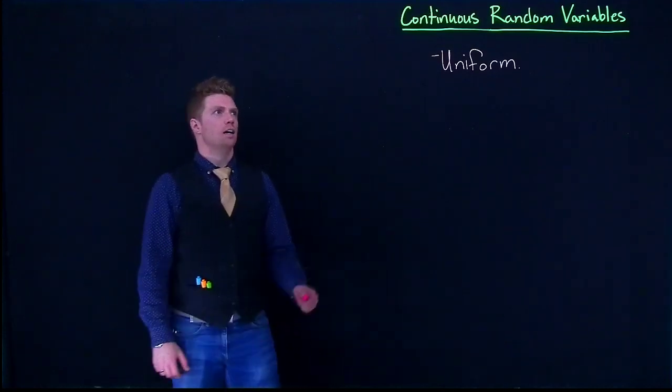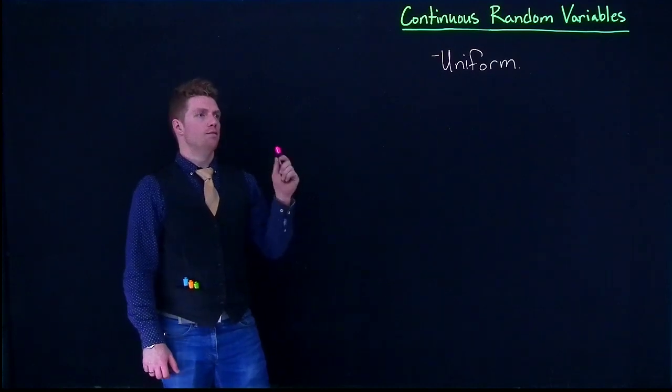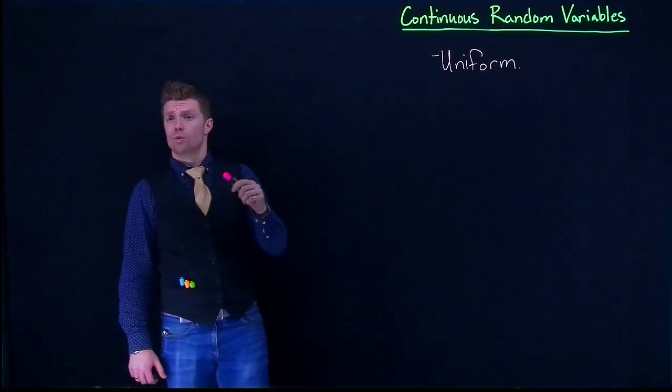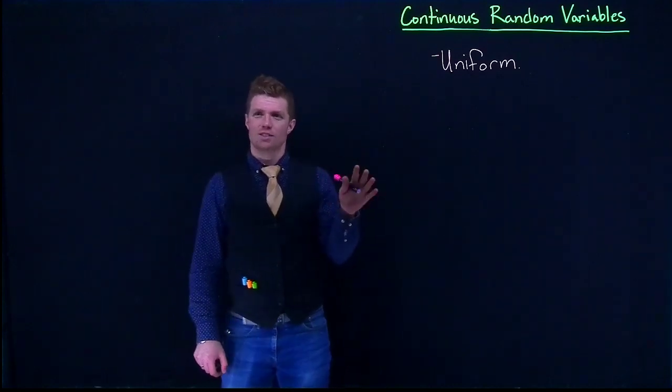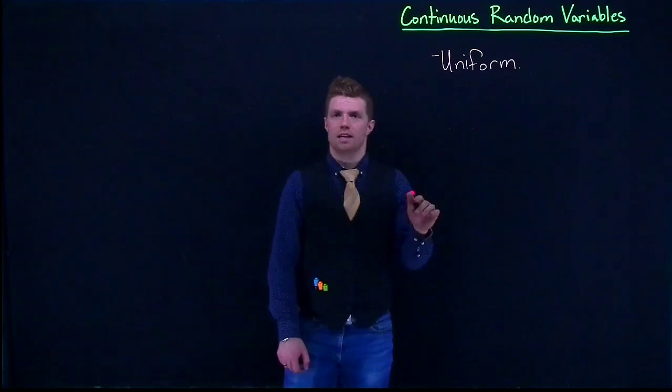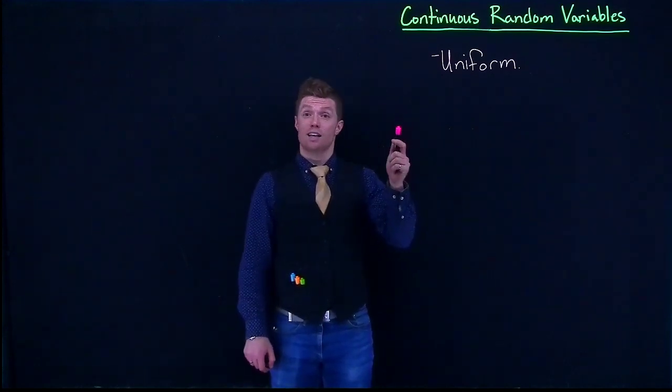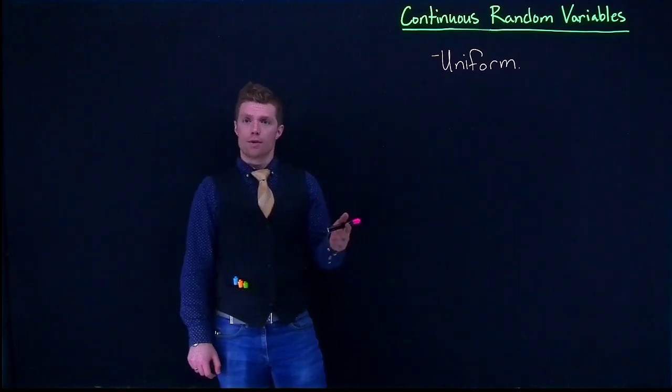Let's take a moment and discuss the uniform continuous random variable. When we start talking about our continuous random variables, we have to adjust our equations for our means and our variances to take into account that we now have continuous random variables instead of discrete random variables.